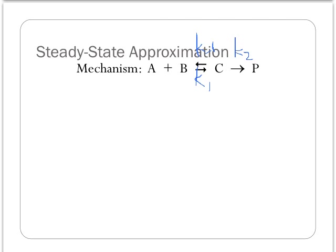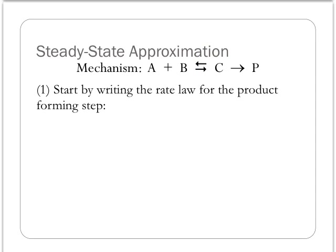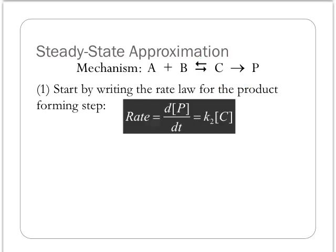We care about making stuff. So what I'm going to really care about is the rate at which I form my product. So what is my product forming step? It's the second step of the reaction mechanism. So what's the rate law for that second step? It would simply be dP/dt is going to be equal to K sub 2 times the concentration of C. That's how I make the product P. I go from C to P. So there's my rate law for the product forming step.